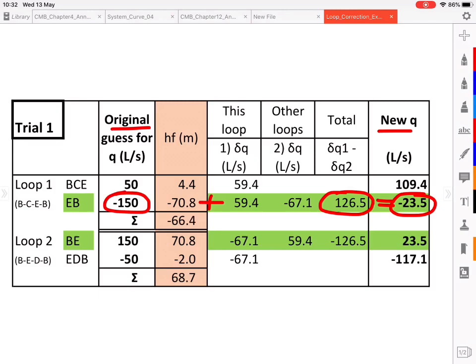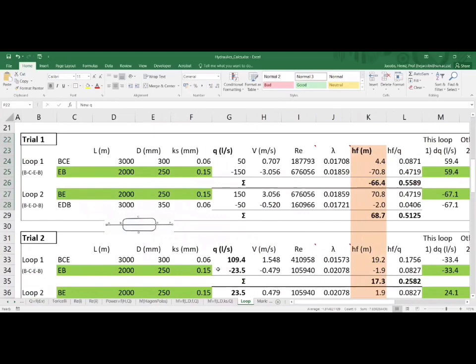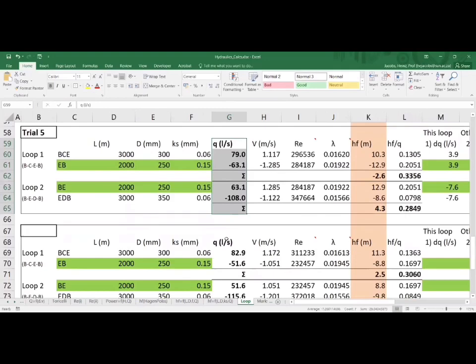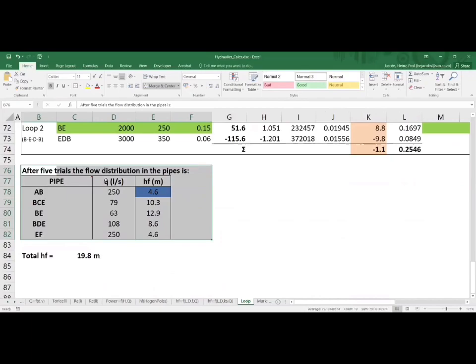Now we have the new Q value for every pipe. Transfer this to the second trial as your input Q values, then repeat the process. Find new Q values, continue to trial 3, trial 4, trial 5, etc., until you have the final answers. Make sure to include pipe AB and EF as well, and then calculate the total head loss through all the pipes.